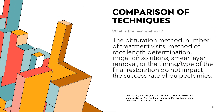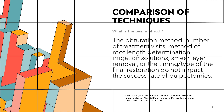Cole's systematic review and meta-analysis of non-vital pulp therapy for primary teeth showed that the obturation method, number of treatment visits, method of root length determination, irrigation solutions, smear layer removal, or the timing and type of the final restoration did not impact the success rate of pulpectomies — meaning that there really isn't a single best way, and all accepted clinical ways of performing this procedure can be successful in the right patient.